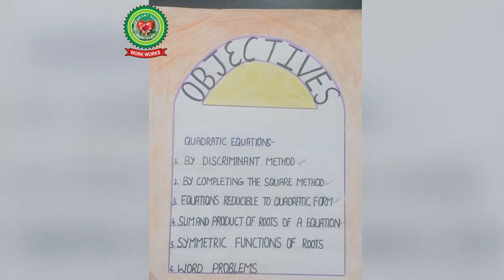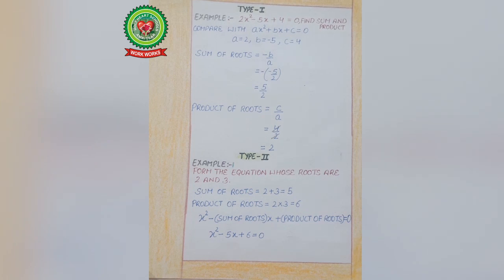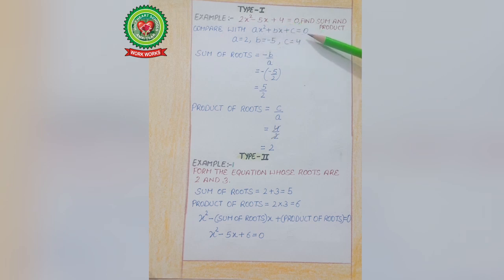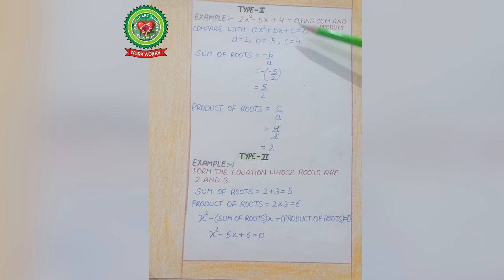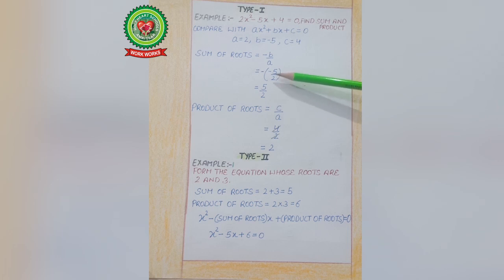Now our first type: a Quadratic Equation is given and we have to find the Sum and Product. Compare the given equation with ax² + bx + c = 0. From here, the value of a is 2, b equals −5, and c equals 4. The Sum of Roots formula is −b/a. Fill in the values of b and a, and after solving, the answer is 5/2.